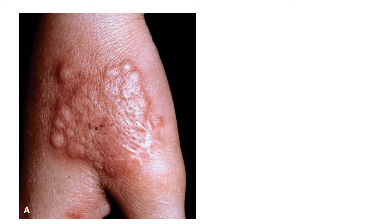This is a close-up view of a lesion of Sweet syndrome. There are many papules that look like vesicles, especially at the border of the lesion, and these papules are coalescing and merging together. However, these are solid.